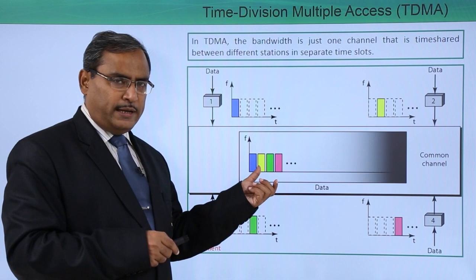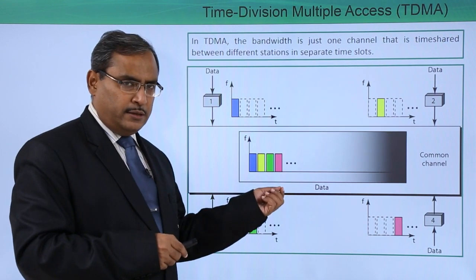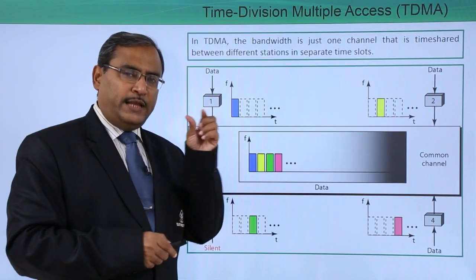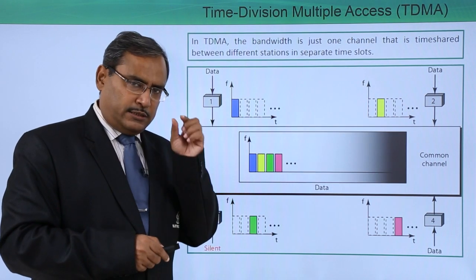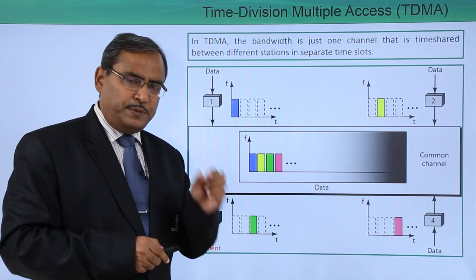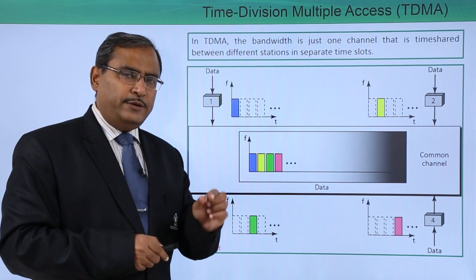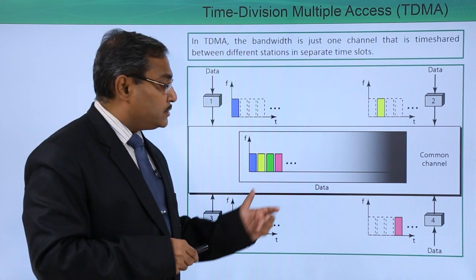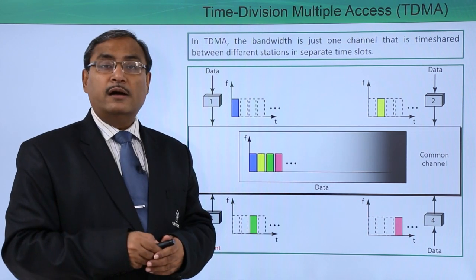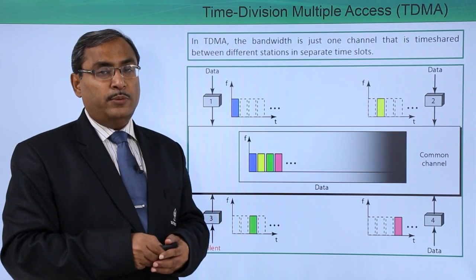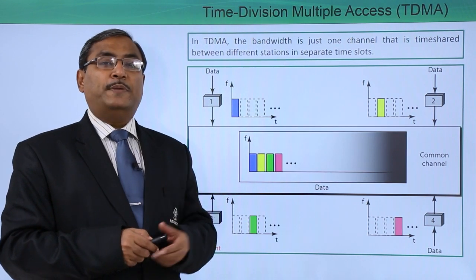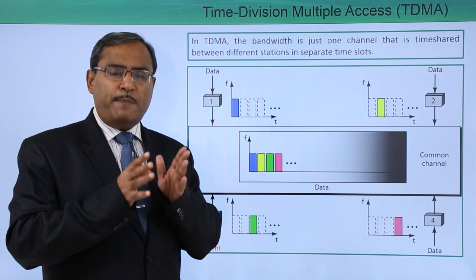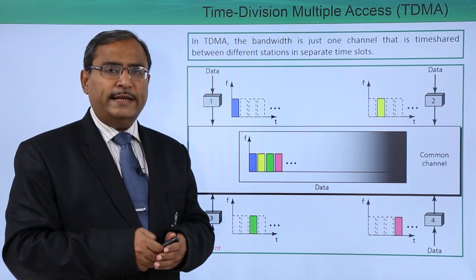When the favorable slot comes and it is meant for a certain station, then during that period of time the station can transmit utilizing the full bandwidth, but not always. There is no guard band here — in the case of FDMA we had a guard band, and due to its presence some portion of the bandwidth was not getting utilized.